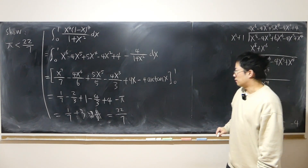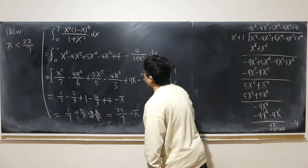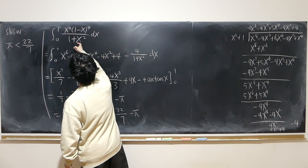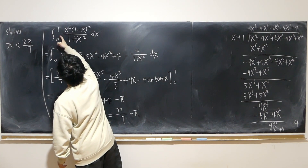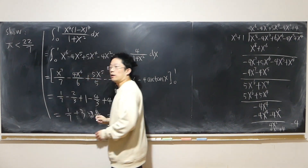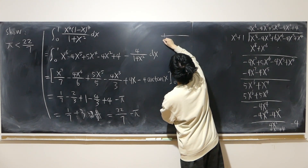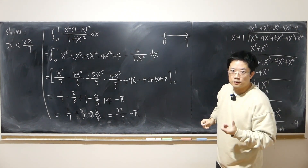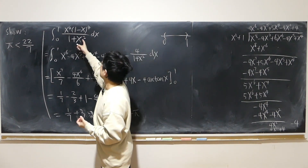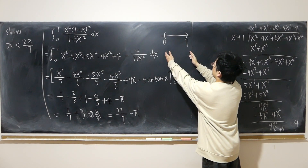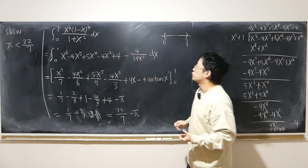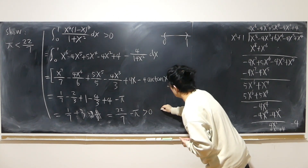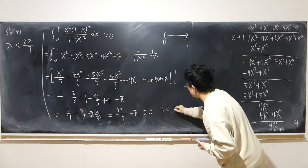So we get 22/7 minus π. To prove π is less than 22/7: the integrand is obviously positive — except at the edges where it equals 0 — but within the open interval, the integrand is strictly positive. The edges do not impact the integral. So overall the integral is strictly positive, meaning 22/7 minus π > 0, so π is less than 22/7.